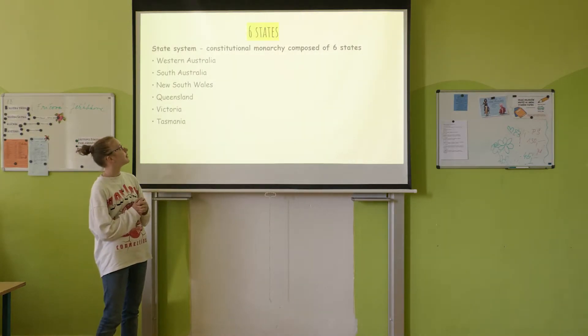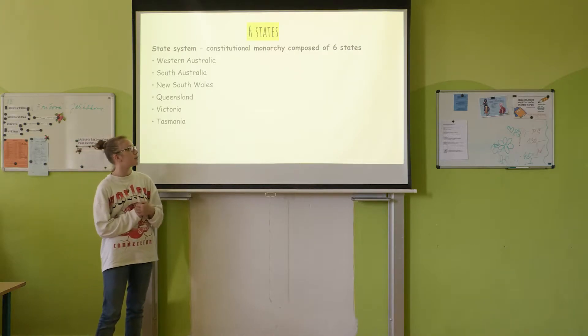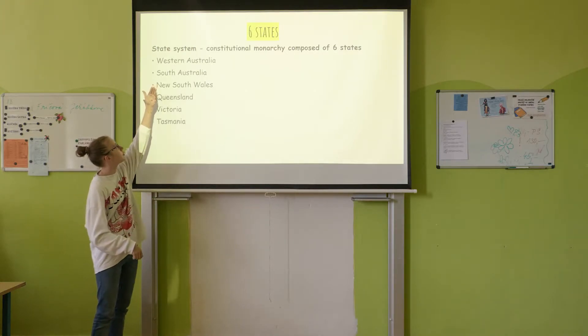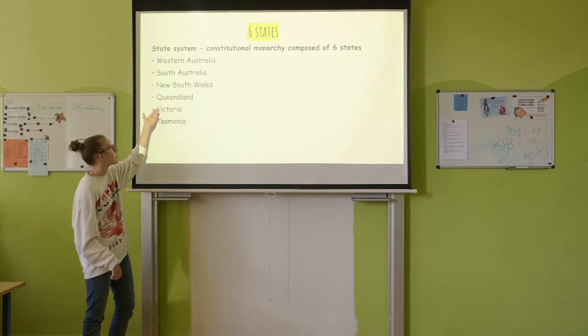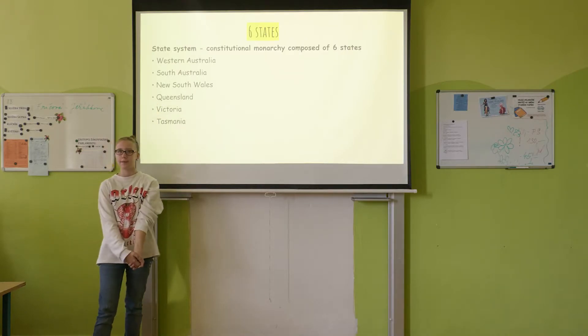Australia has six states. It is a Constitutional Monarchy composite of six states: Western Australia, South Australia, New South Wales, Queensland, Victoria, and Tasmania.